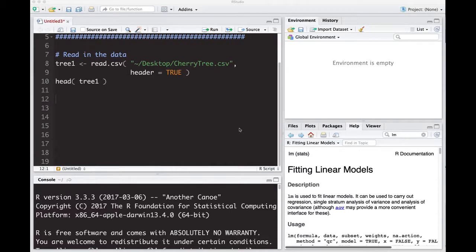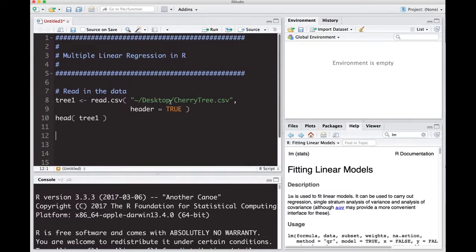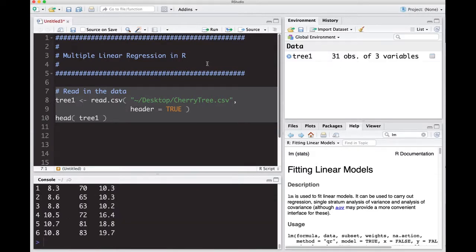Welcome to the R video tutorial on multiple linear regression in R. We're going to extend simple linear regression to multiple linear regression. The data set we're going to use is called the Cherry Tree CSV, linked in the repository below. Go grab it and maybe pause the video right now while you get it ready, and then we're going to use this code to read it in.